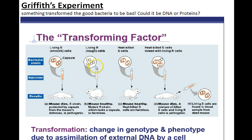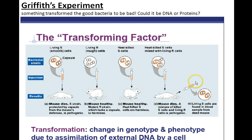You inject the mouse with the rough cells that don't cause disease — no problems, the mouse is fine. If you kill the disease-causing S cells, the smooth cells, the mouse is okay. However, when you mix the heat-killed smooth cells that cause pneumonia with the living R cells that don't cause disease, the mouse dies. When you pull out the bacteria from the mouse, they all turn out to be living S cells. So something inside those heat-killed S cells transformed the living R cells to become S cells, and that was later discovered to be DNA.